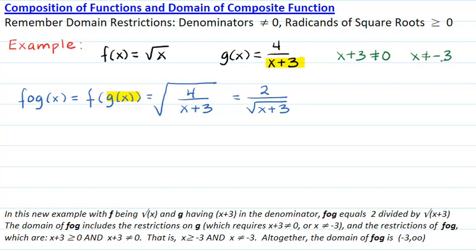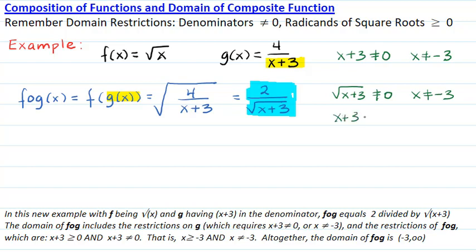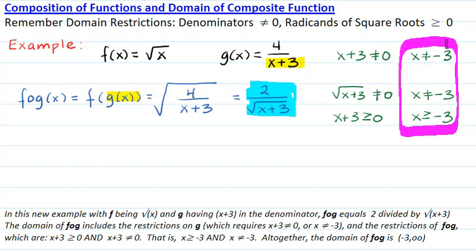We also consider the restrictions of the overall expression. The result has two issues: it has a denominator, so the radicand must not equal 0, giving x not equal to negative 3; and it has a square root radicand which must be greater than or equal to 0, so x must be greater than or equal to negative 3. Putting all restrictions together, the domain is all numbers greater than or equal to negative 3 but not equal to negative 3 — therefore, open at negative 3 to infinity.